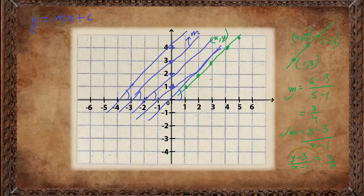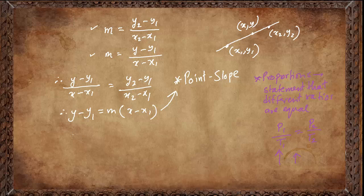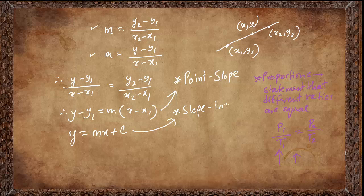The equation of the lowest line is y equals to mx plus 1. The next one is y equals to mx plus 2, then y equals to mx plus 3, and so on. So the general rule is y equals to mx plus c, where m is the slope of the line and c is the y-intercept. This form is known as the slope-intercept form.